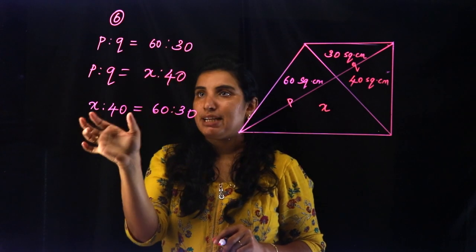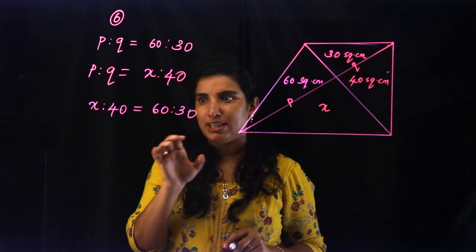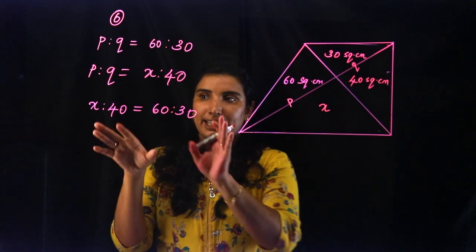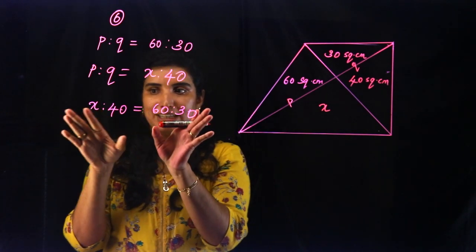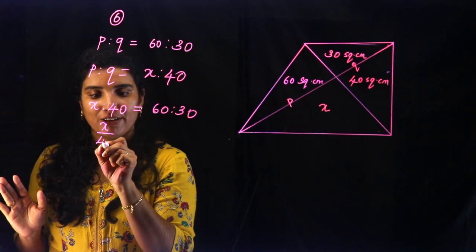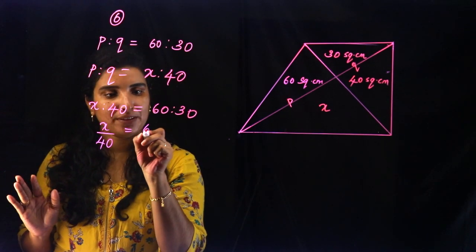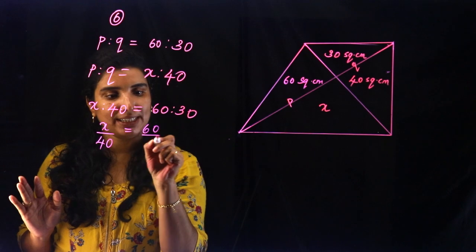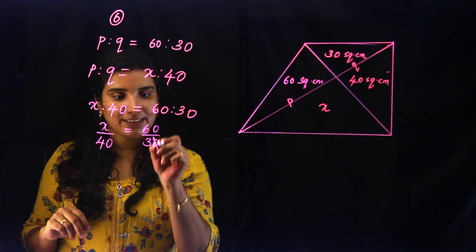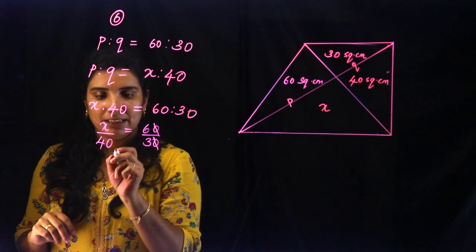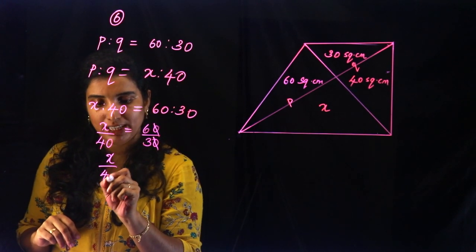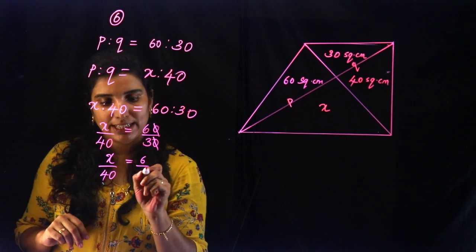So, X is to 40 is equal to 60 is to 30. Using this division formula: X by 40 is equal to 60 by 30. Therefore X is equal to 60 multiplied by 40 divided by 30, which is equal to 80.